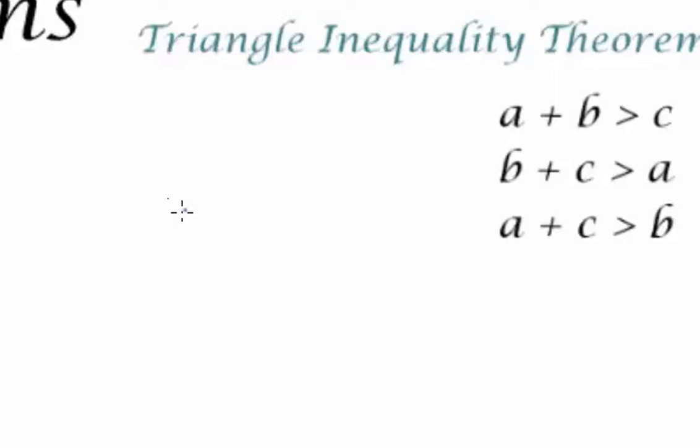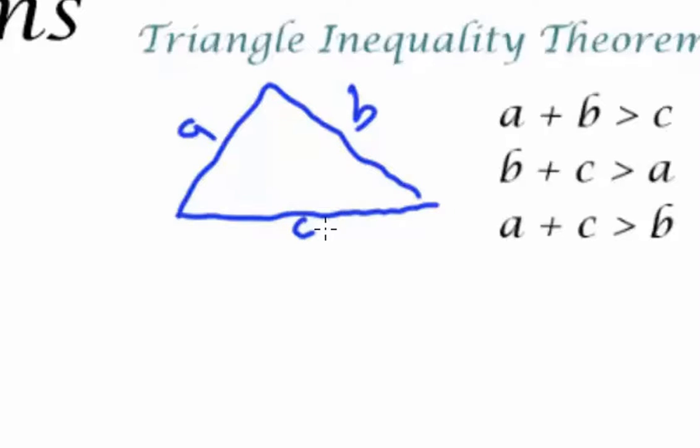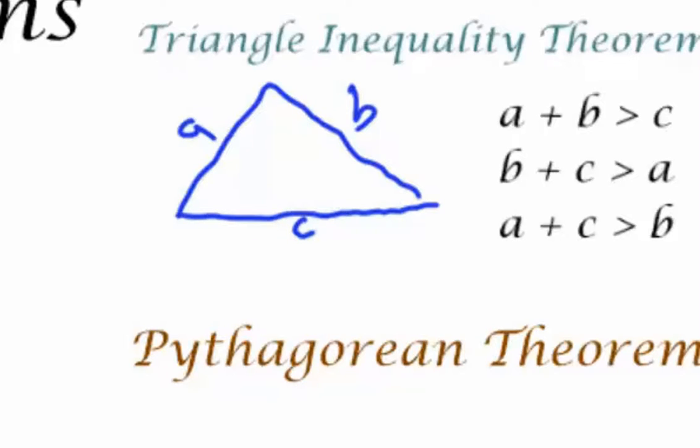The next theorem is the triangle inequality theorem. In this theorem, we discuss the sides of a triangle and specifically note how any two sides of the triangle, when added up, must be larger than the third side. So, A plus B must be bigger than C, B plus C must be bigger than A, and A plus C must be bigger than B.